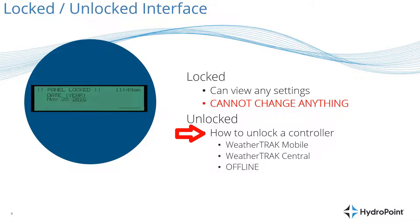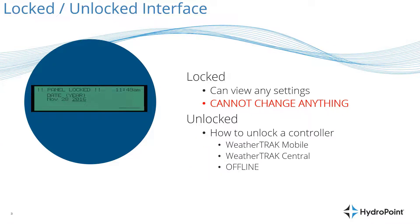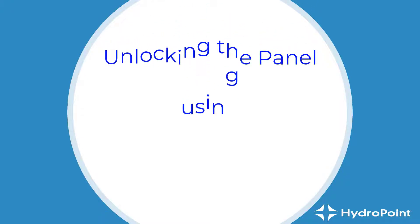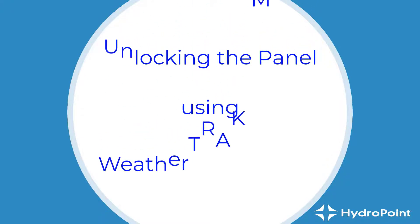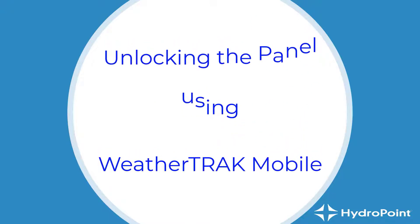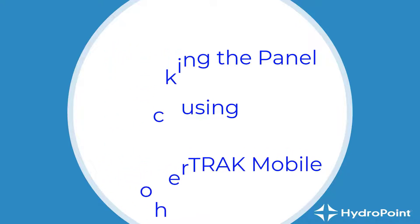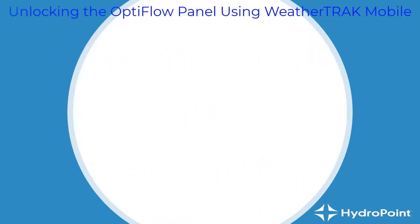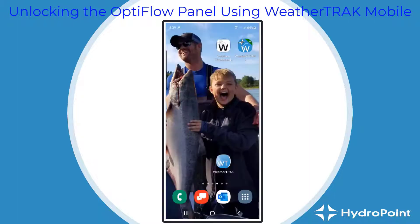I'm going to show you the workflow for how a user would typically unlock a panel using WeatherTrack Mobile, and walk you through unlocking the controller from WeatherTrack Central, or unlocking a controller that's offline. We'll begin with a demonstration of unlocking your OptiFlow panel using WeatherTrack Mobile. We think of this as the most common workflow because if you're at the panel, you're in the field, and WeatherTrack Mobile is designed for this application.